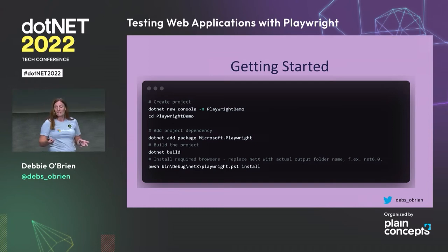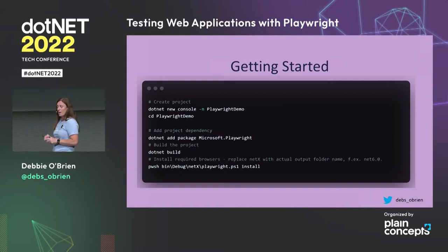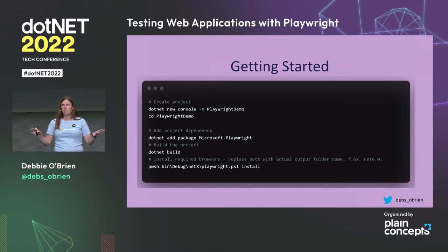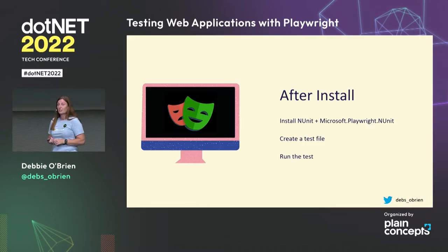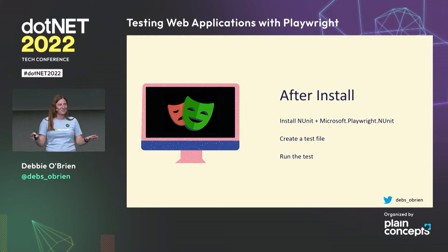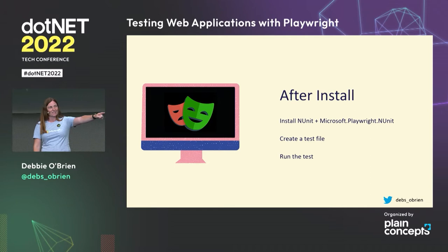Getting started: create a new project with `dotnet new console Playwright demo`, CD into the directory, then `dotnet add package Microsoft.Playwright`, build it, and install the required browsers. After install, add Microsoft Playwright NUnit, create your test file, and run the test. And that's where everyone gets lost — we can install it, maybe run one test, and then it gets boring. This is what we're going to fix.